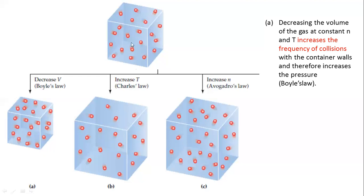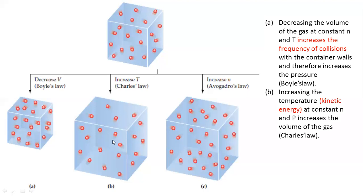For Charles' Law, explained using the kinetic molecular theory: by increasing the temperature, the volume is going to increase, as you can see from the larger box compared to the initial stage. Keeping the number of moles and pressure constant — pressure at one atmosphere — when you increase the temperature, the kinetic energy increases, which in turn increases the volume of the gas.